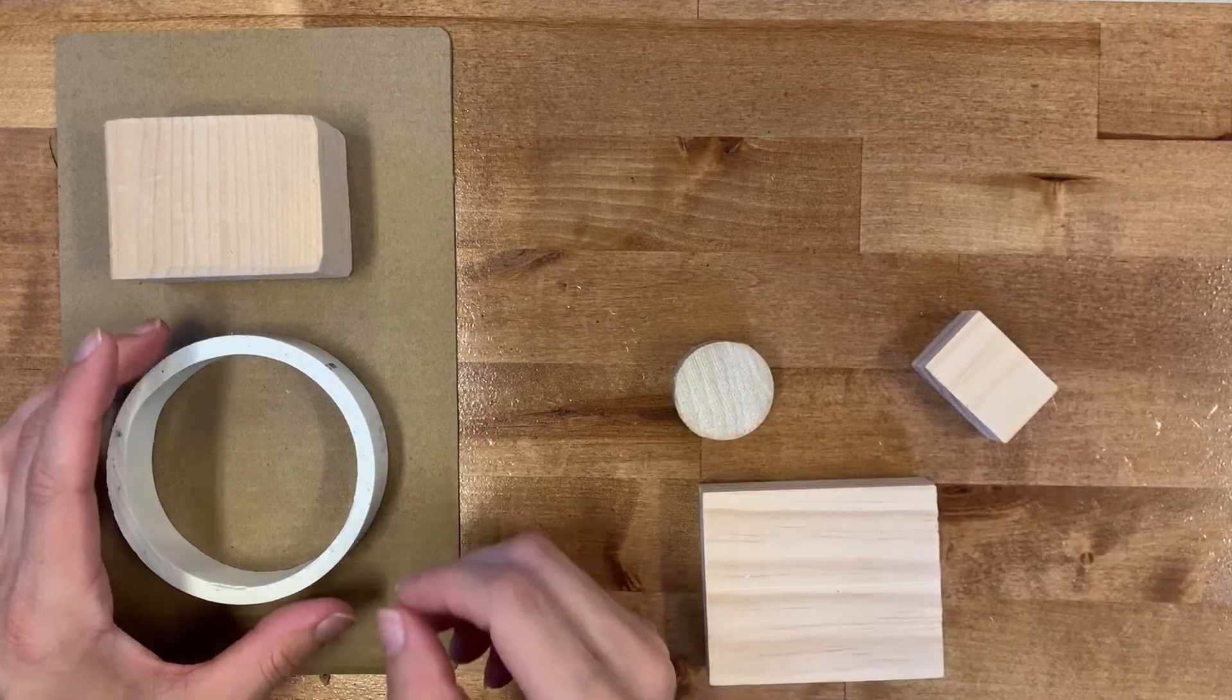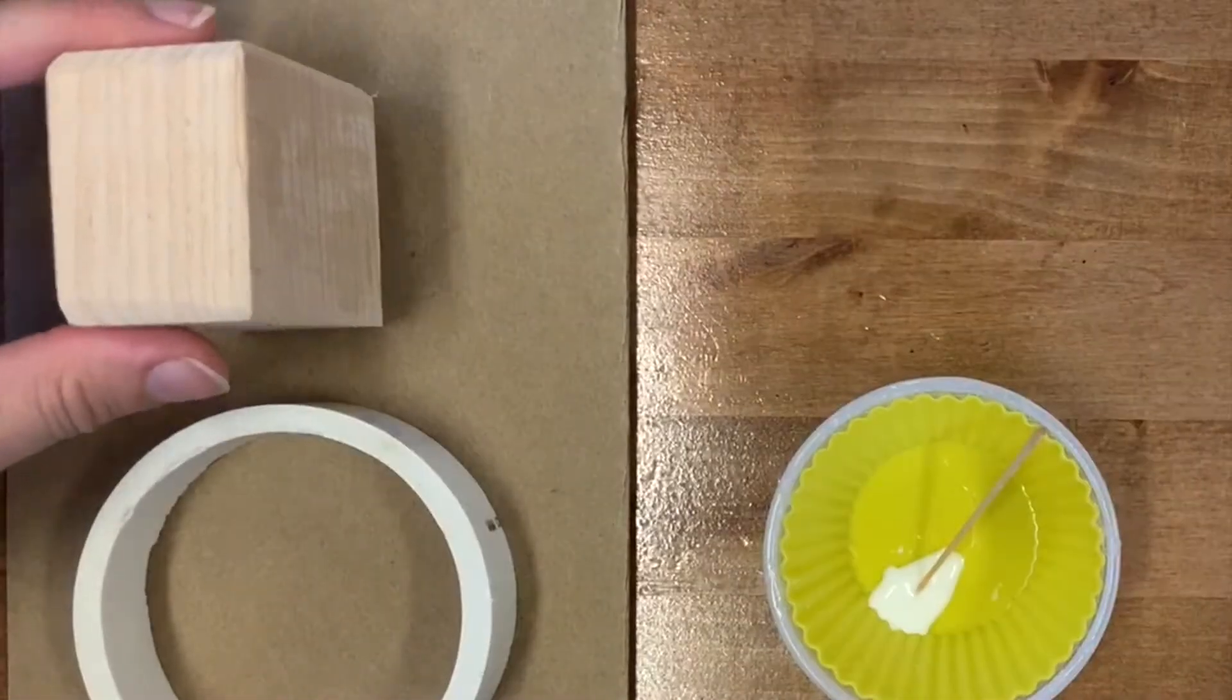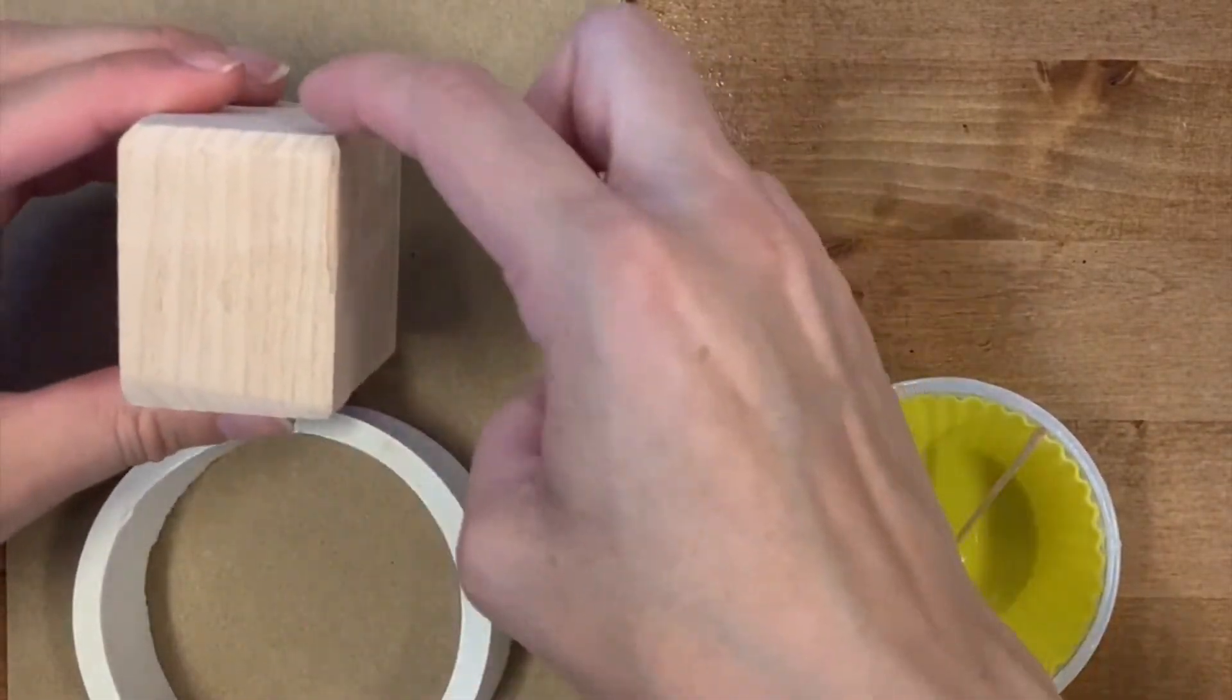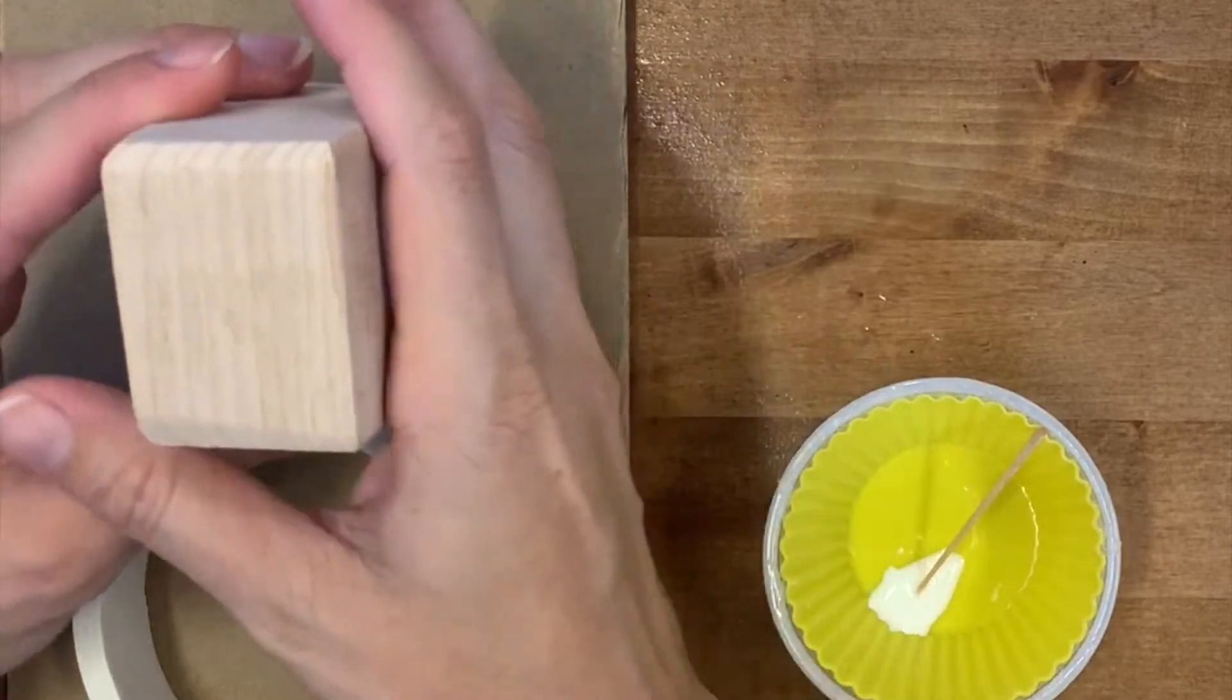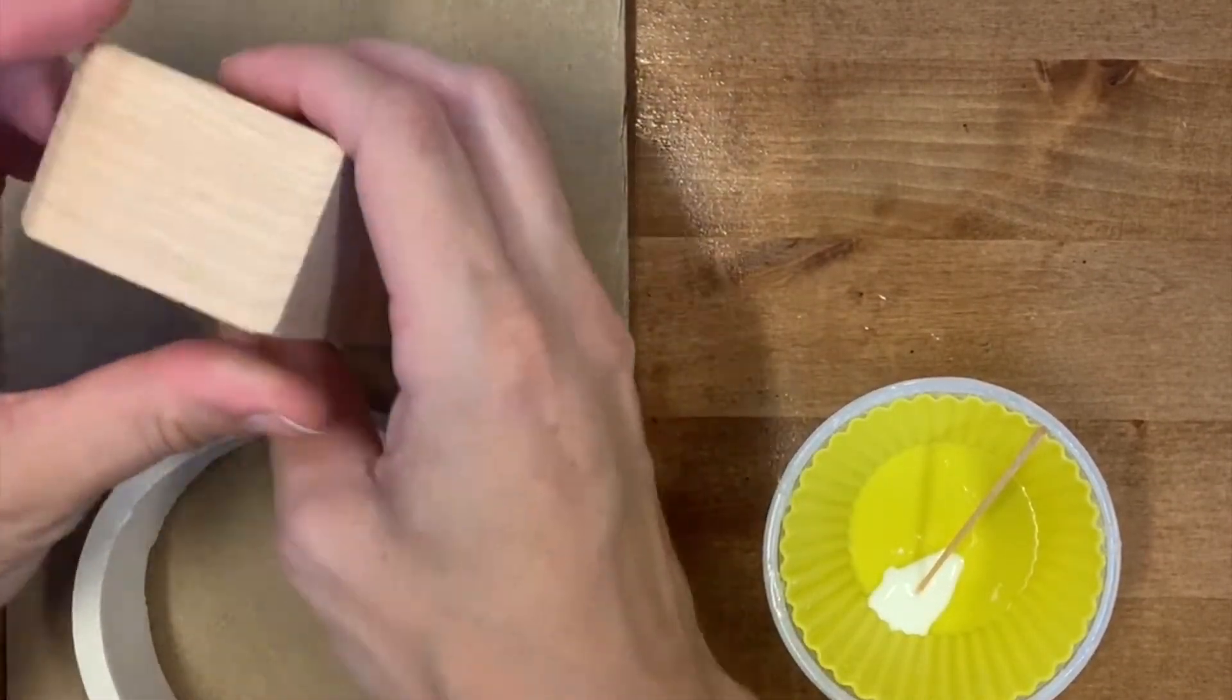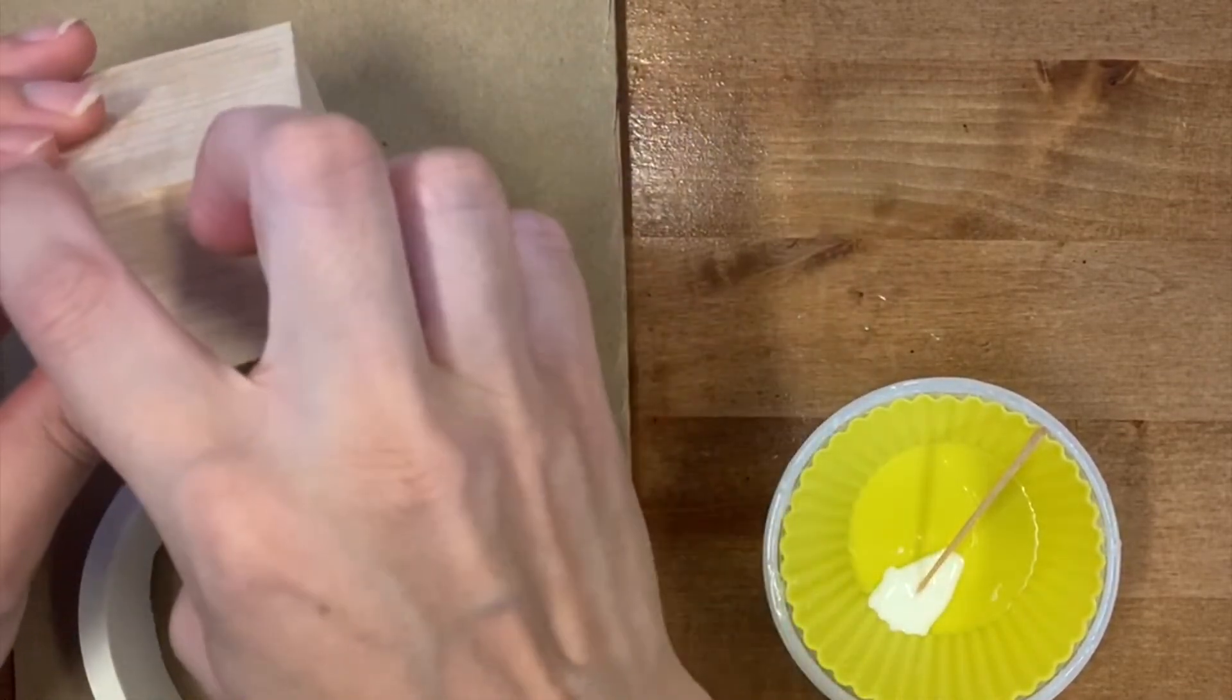I'm going to begin by wrapping the paper around the different templates. When you're wrapping your paper around your templates you can wrap any direction. So I could wrap around this way or I could wrap around this way. I think I want a little bit of a smaller head here so I'm going to wrap around this way.